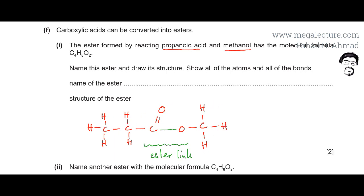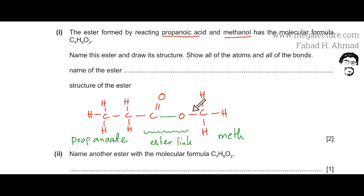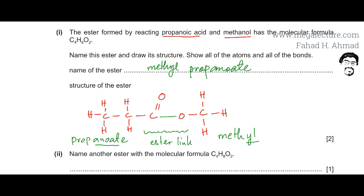Now naming this ester — esters are named in two parts. The left side of the ester link has three carbon atoms, so the name starts with 'prop' and the carboxylic acid side suffix is '-oate', giving 'propanoate'. The right-hand side has one carbon atom — the alcohol side — so the name starts with 'meth' and ends with '-yl', giving 'methyl'. Putting the two parts together — methyl first — the name of this ester is methyl propanoate.